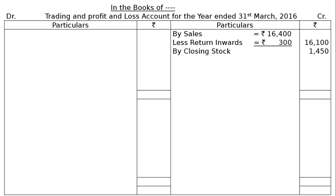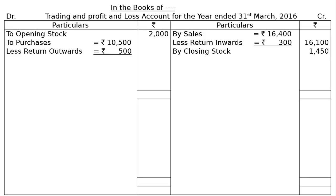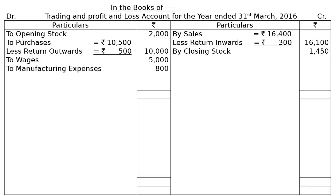On the debit side of the trading account: opening stock rupees 2,000; purchases rupees 10,500 less return outwards rupees 500, giving rupees 10,000 in the final column. Other direct trading expenses include wages rupees 5,000, manufacturing expenses rupees 800, and carriage rupees 150.